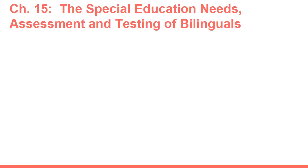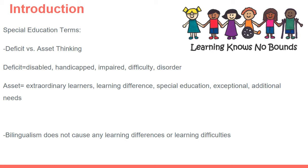Let's now talk about Chapter 15 — the special education needs of bilinguals and the assessment and testing of bilinguals in terms of special education. We first begin with a discussion of special education terms, which have evolved over time. One concept that applies here, as in language ability, is deficit thinking versus asset thinking. Deficit thinking sees things as a negative that could hinder a person's educational progress, whereas asset thinking views differences as something that defines that person in a positive way and can be used for their educational growth.